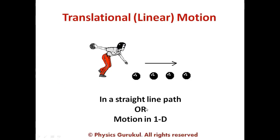Translational motion: when an object moves in a straight path or straight line — like the motion of a car on a road — that is motion in 1D. These kinds of motion are called linear motion, also called motion in a straight line.